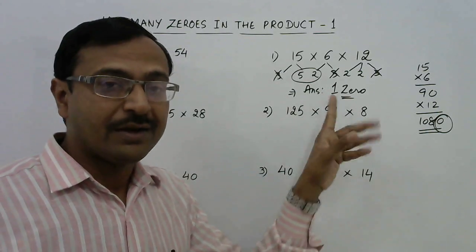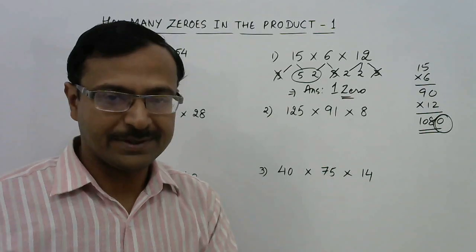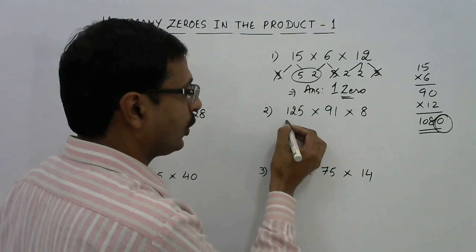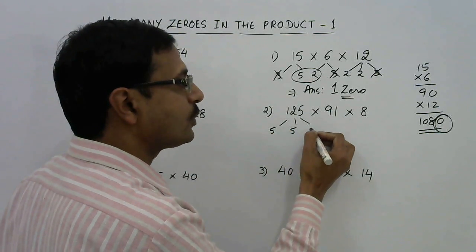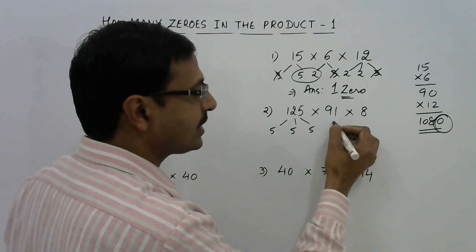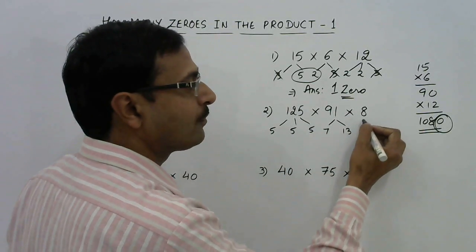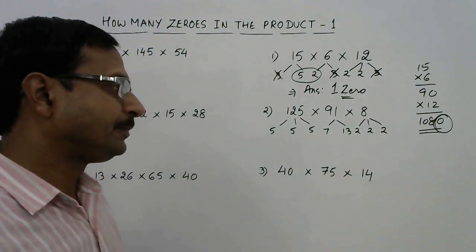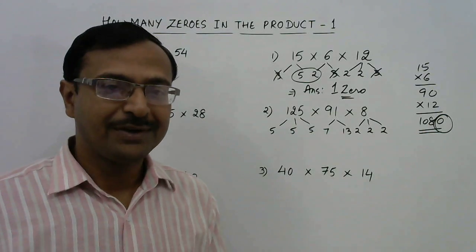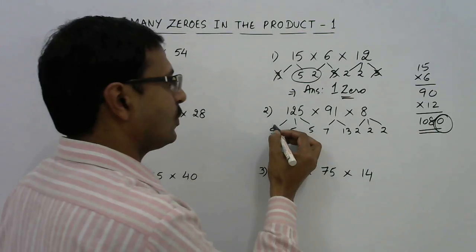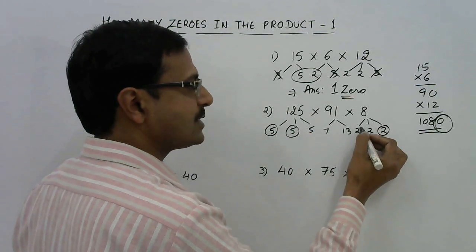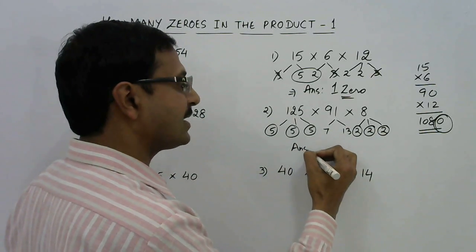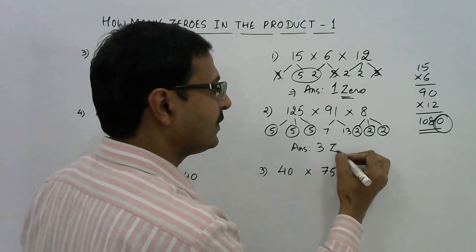Let's see more examples. 125 is 5³, so we have three fives. 91 is 13 × 7 — no twos or fives. 8 is 2 × 2 × 2, giving three twos. Now making pairs of fives and twos: pair one, pair two, pair three — three pairs. So our answer for this question will end with three zeros.